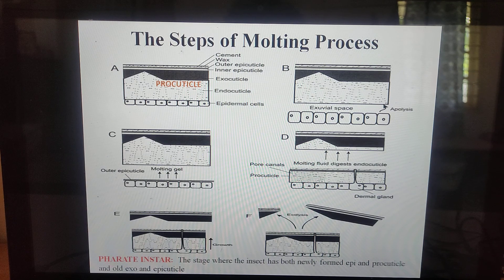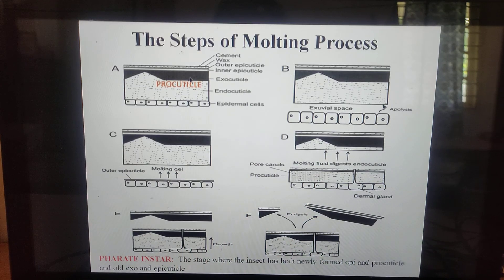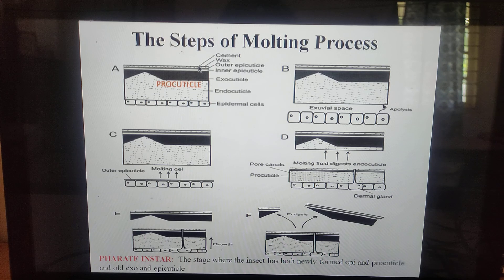Before discussing the steps of molting, let's look at the structure of the integument. The inner epidermal layer consists of epidermal cells. On top of it is the outer cuticle, divided into the outer epicuticle and the inner procuticle. The procuticle is divided into the outer exocuticle and the inner endocuticle. The epicuticle is further differentiated into the cuticlin layer, polyphenol layer, cement layer, wax layer, and outer cement layer.